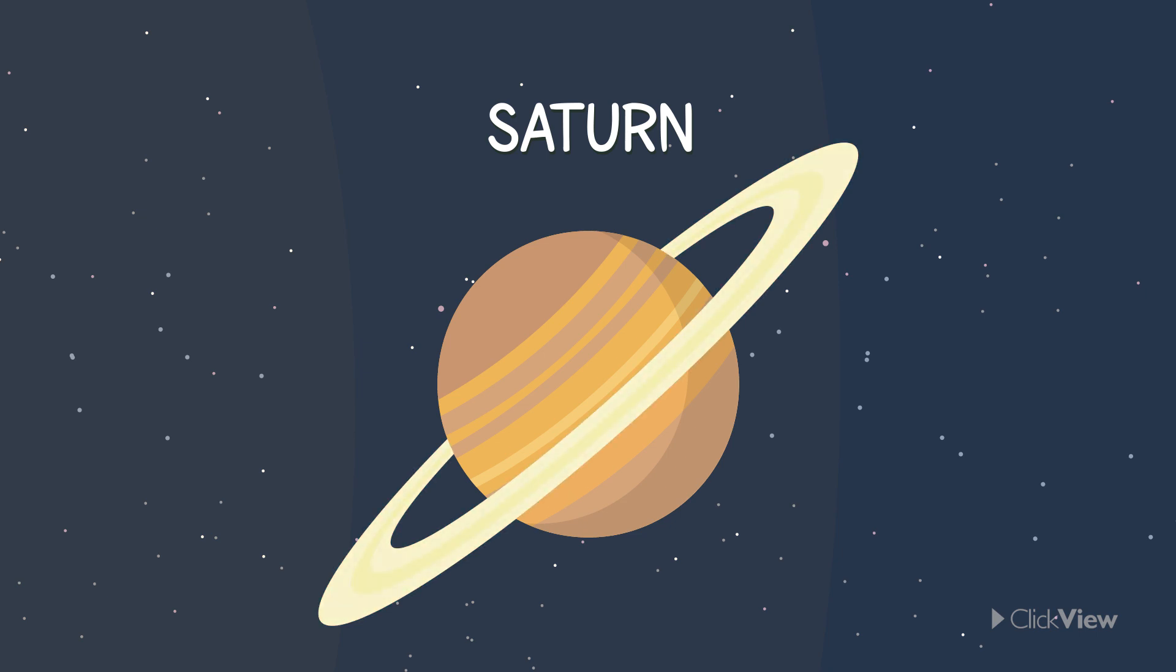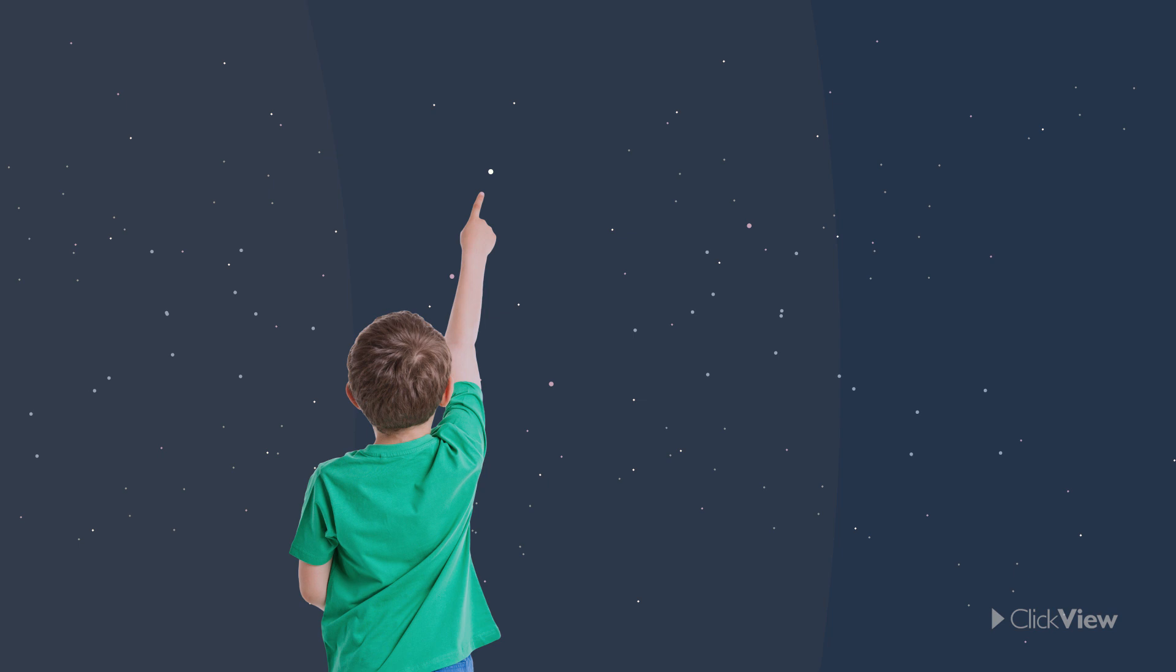The sixth planet is Saturn and is known as the planet with the rings. It is the second biggest planet. Did you know that on a clear night, Saturn is the farthest planet from the Earth that can be seen by the naked human eye?